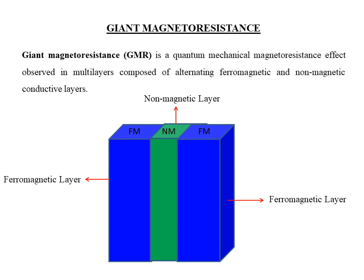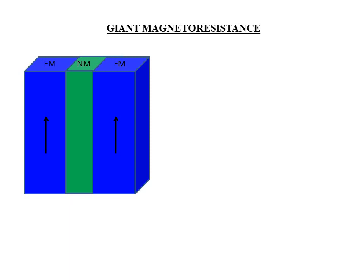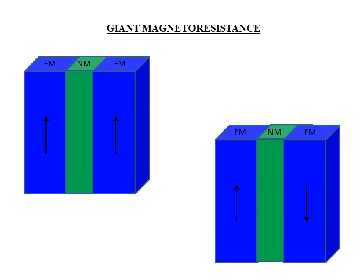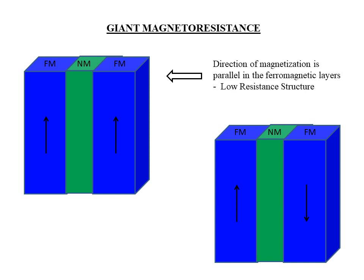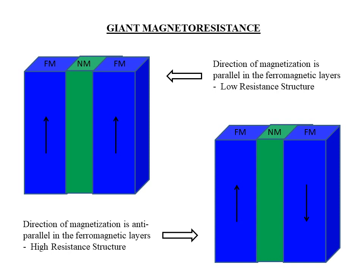The ferromagnetic layers are free to change their magnetization direction depending on the applied field. There are two possible alignments: parallel alignment, where the magnetization on both ferromagnetic layers faces either upwards or downwards, and anti-parallel alignment, where the magnetization faces in opposite directions. Depending on the parallel or anti-parallel alignment, the electrical resistance of the structure varies. For parallel alignment, the resistance is low; for anti-parallel alignment, the resistance is high.